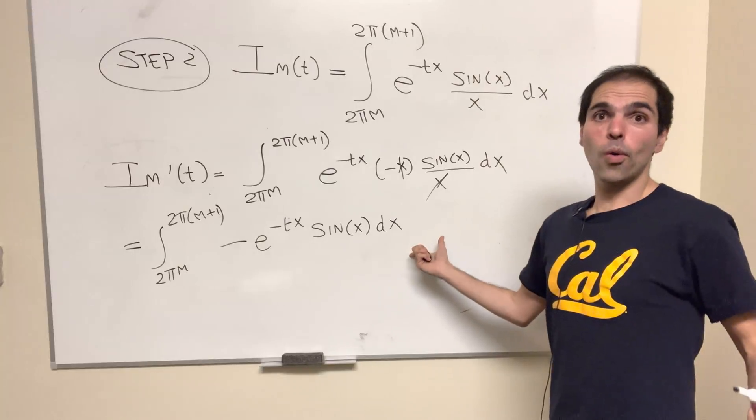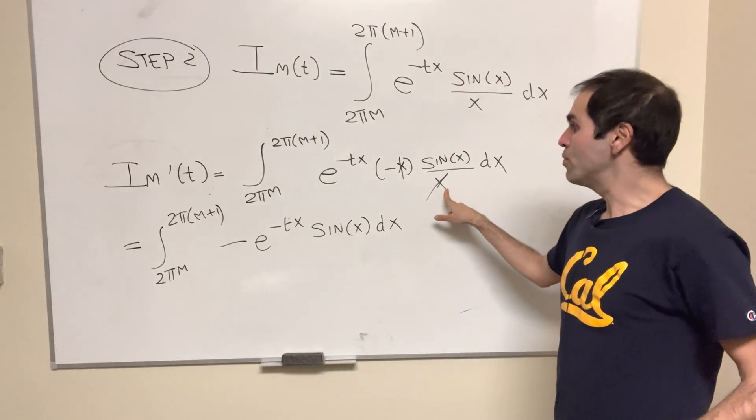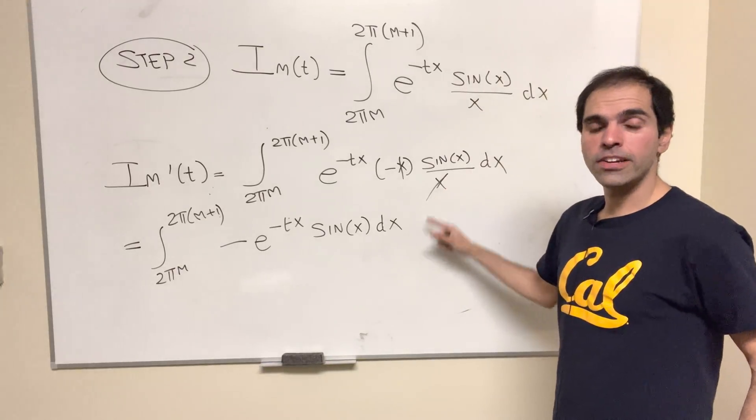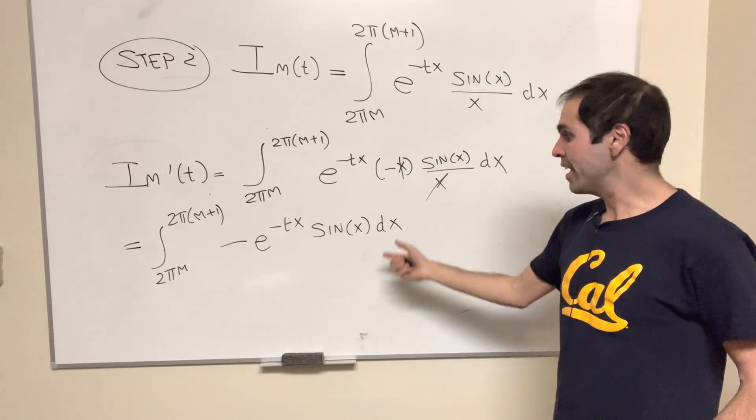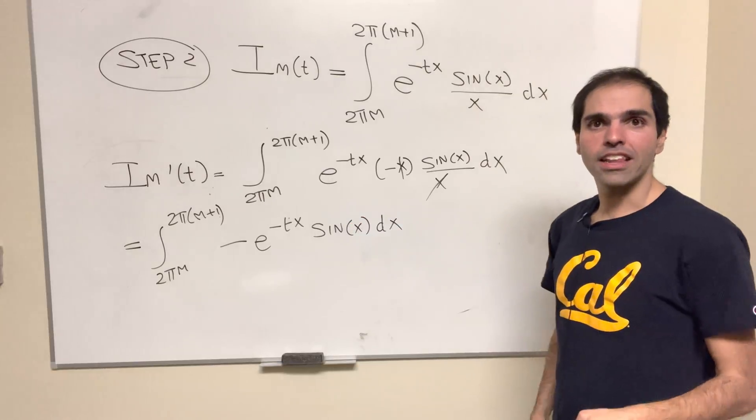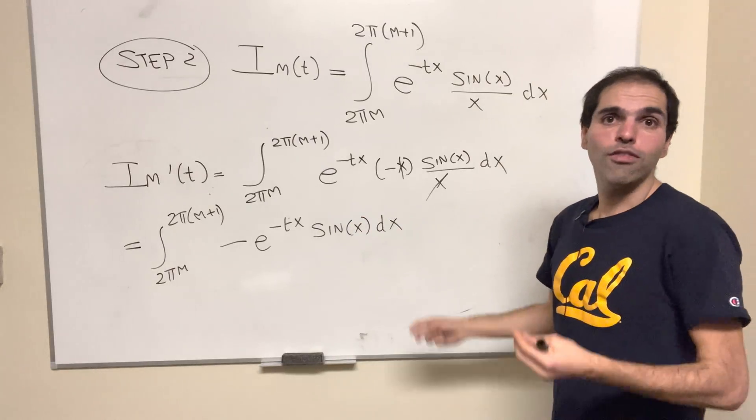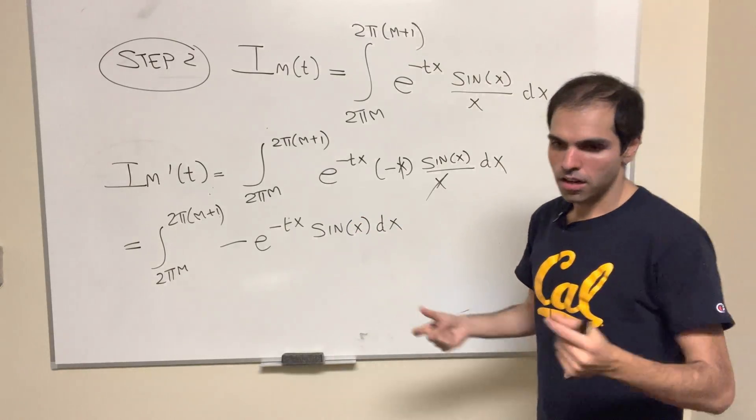So integral from 2πm to 2π(m+1) of -e^(-tx) sin(x) dx. And this one is totally doable, because again, we don't have an x in the denominator. So literally what you do, you integrate by parts twice, and solve for that integral, and then you get the following formula.